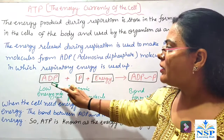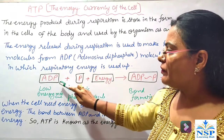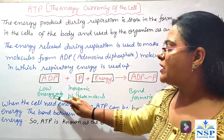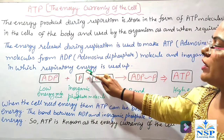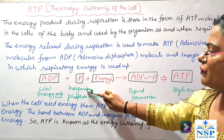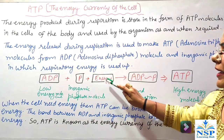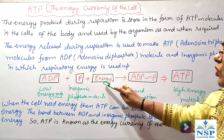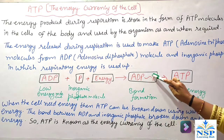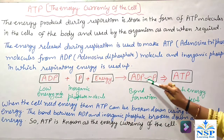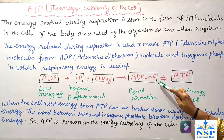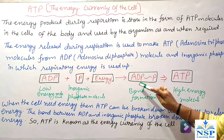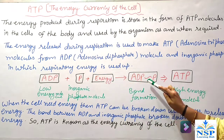ADP, adenosine diphosphate, is a low energy molecule. It unites with inorganic phosphate and energy is stored in this type of bond. During bond formation between ADP and inorganic phosphate, energy is stored.